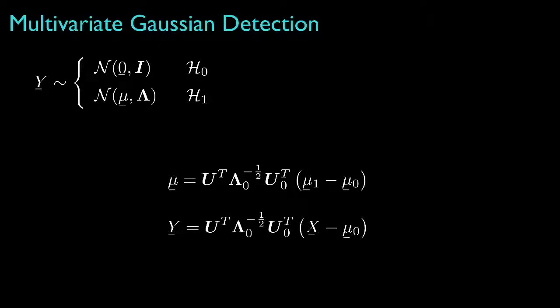Now, if we call this transformed mean vector mu, then we can express any multivariate Gaussian detection problem as one in which the mean for hypothesis 0 is 0, the covariance for hypothesis 0 is an identity, and the covariance for hypothesis 1 is a diagonal matrix which corresponds to the uncorrelated elements with possibly different variances.